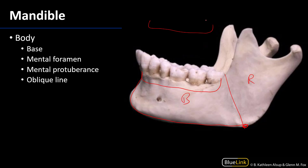We also have the base of the mandible, which is the margin along the bottom of the body. The mental protuberance — mental comes from mentum, Latin for chin — so the shape of the bone here determines the shape of the chin and provides the underlying architecture. There's also an oblique line of the mandible running along there, providing an attachment surface for the depressor angularis, depressor labii inferioris, and portions of the platysma muscle as well.